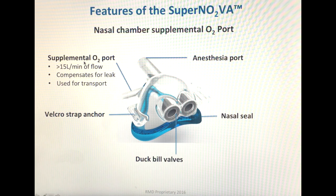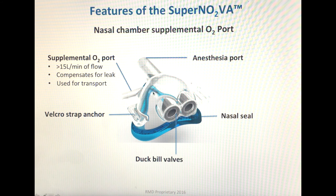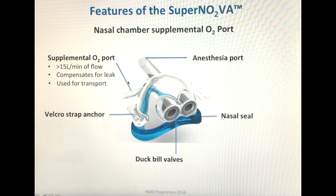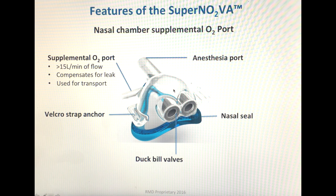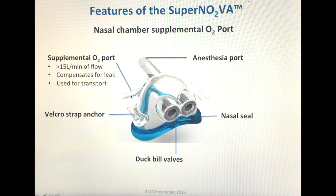The Supernova also has a supplemental oxygen port, which serves two functions. First, it allows an additional 15 liters of oxygen to flow into the mask — useful if a patient has an excessive leak out of the mouth, allowing compensation for that leak by adding additional flow. The second function is that it can serve as a supplemental oxygen mask for transport. Rather than switching to a nasal cannula or oxygen face mask at the end of the case, you simply connect oxygen tubing to the Supernova's supplemental oxygen port to transport the patient to PACU.